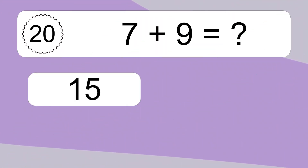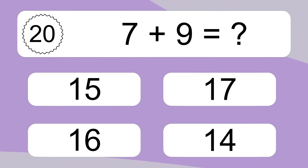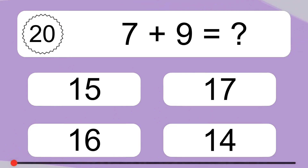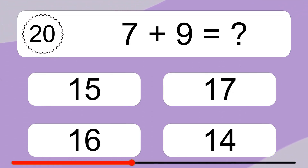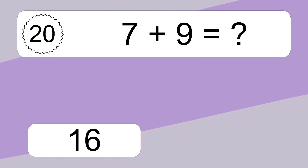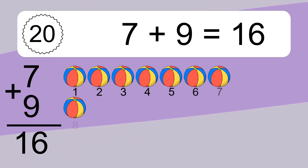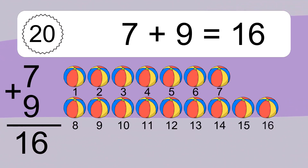7 plus 9 equals what? 7 plus 9 equals 16.